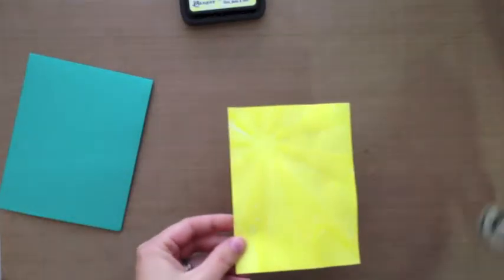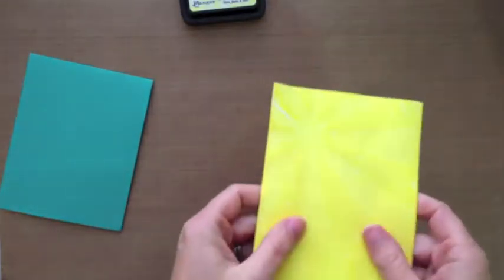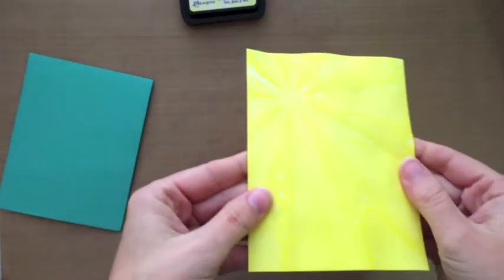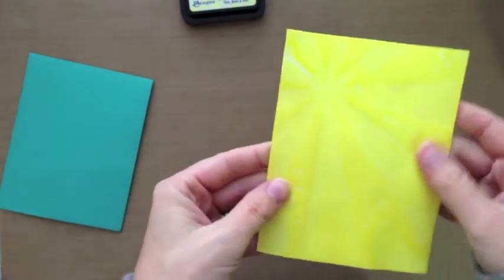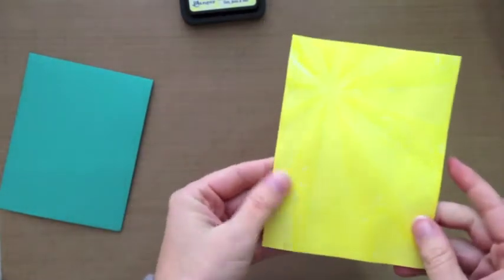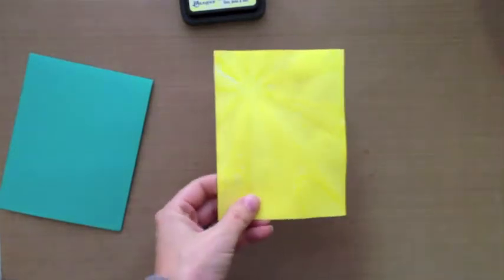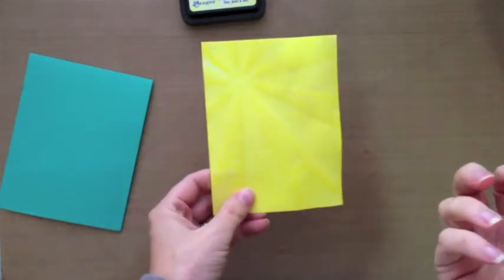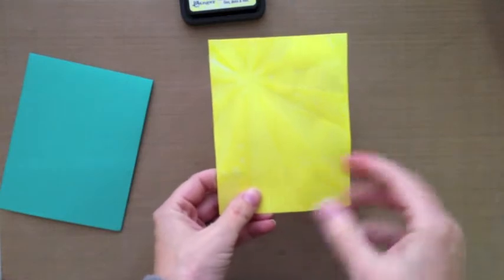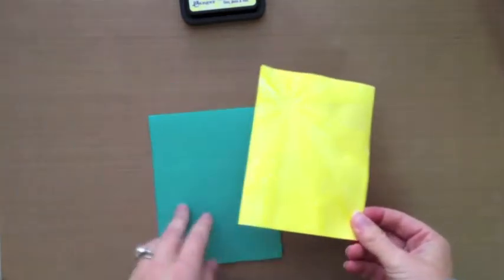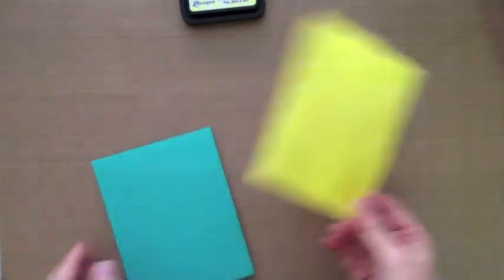I just zapped it with my heat gun real quick and then you have this really fun, super easy background to make. It gives you a lot of texture from the water. You could do the water flicking technique and just take some water on your finger, on a paintbrush, and flick it onto the paper if you wanted, but I'm pretty satisfied with how it looks.